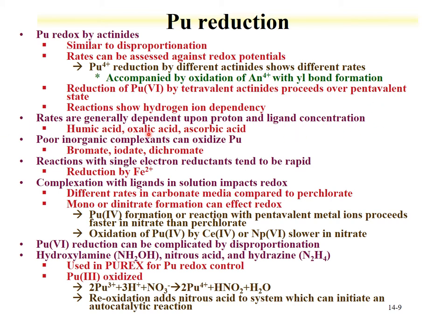Ligands — for instance, certain organic ligands — can stabilize lower oxidation states such as plutonium-4. Things that are reduced or oxidized through single electron transfer, such as the single-electron reductant iron-3, tend to be rapid routes for changing the oxidation state of plutonium. Complexation can also change the stability of different redox states; for example, carbonate medium behaves differently compared to perchloric acid because carbonates will bind plutonium effectively whereas perchlorates will not. There is also disproportionation, such as for plutonium-6, which can be complicated by reduction followed by disproportionation.